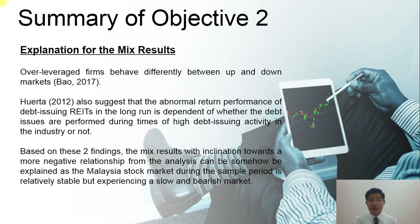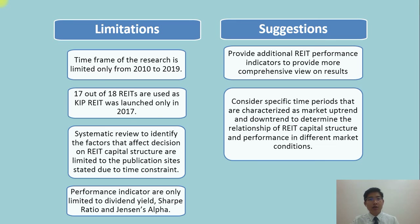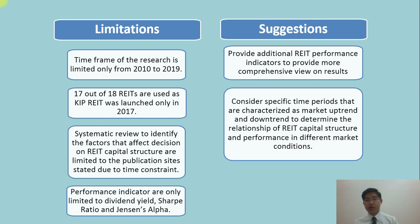The Malaysian stock market during the sample period 2010 to 2019 was relatively stable but experiencing a slow and bearish trend, which explains the mixed results with an inclination toward a negative relationship. Limitations include the timeframe, using only 17 out of 18 REITs, only five publication databases due to time constraints, and only three performance indicators. Suggestions for further studies include adding indicators such as Treynor ratio or total return index, and considering specific time periods characterized as market uptrend or downtrend to further determine the relationship between capital structure and performance.